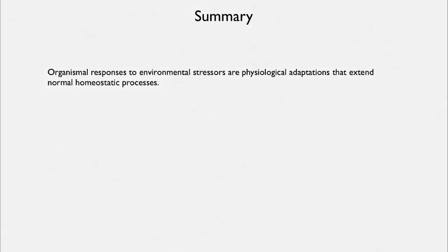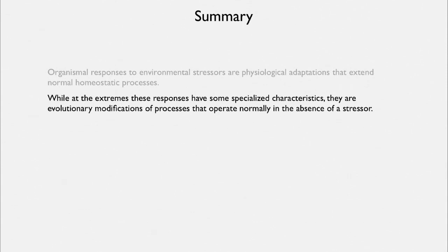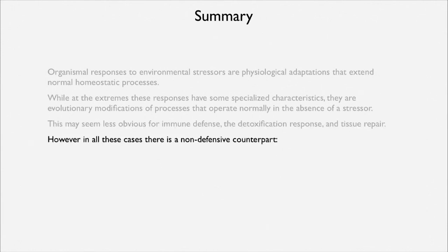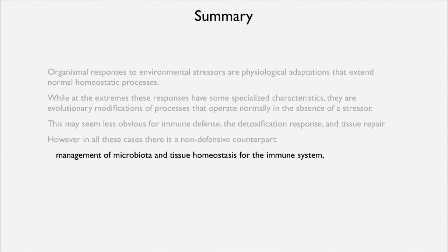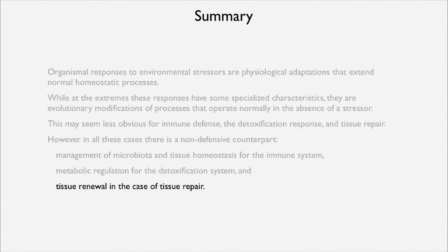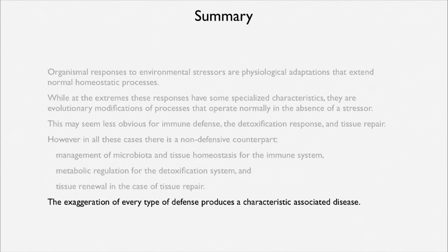To summarize: organismal responses to environmental stressors are physiological adaptations and extensions of normal homeostasis. While at the extremes they have some specialized characteristics, they are all evolutionary modifications of processes operating normally. That might seem less obvious for immune defense, the detoxification response, and tissue repair, but all have a non-defensive counterpart — management of microbiota for the immune system, metabolic regulation for detoxification, and tissue renewal for tissue repair. Every defense is an evolutionary modification of something that also has a normal physiological function in the absence of the hostile challenge, and every kind of defense produces a characteristic associated disease.